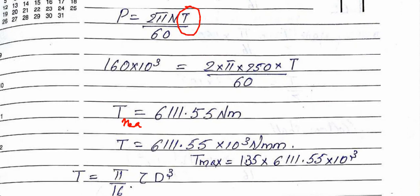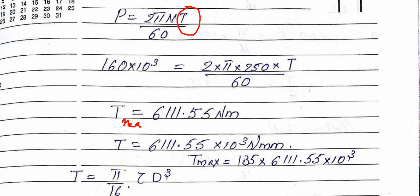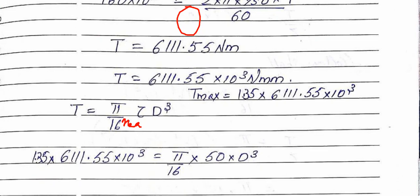The maximum torque T_max = 1.35×T_mean. So T_max = 1.35 × 6,101.55 × 10^3. The mean torque and maximum torque values are now determined.